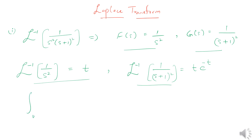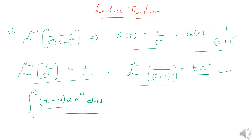Now I will apply the convolution to the problem. The integral is from 0 to t. I write the first function as t minus u, and the second function is u times e raised to the power negative u, du. So the first function is t minus u, multiplied by u e to the power negative u.